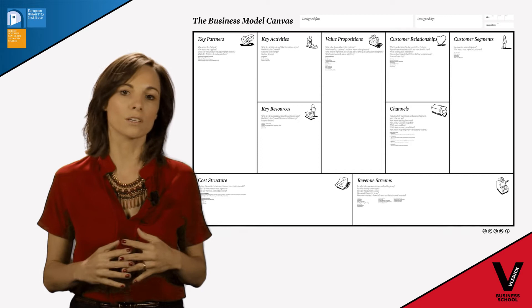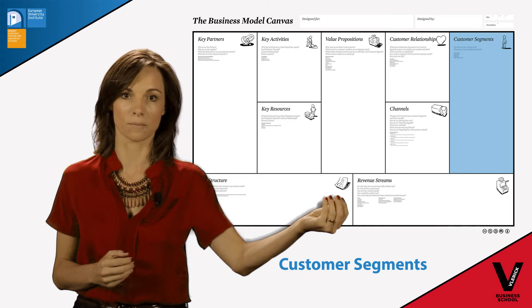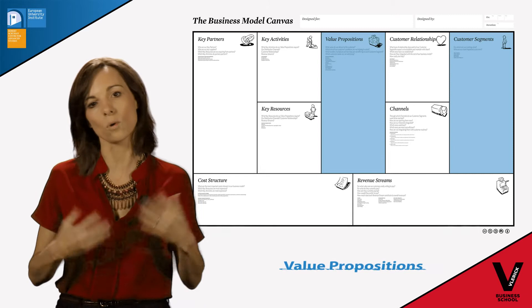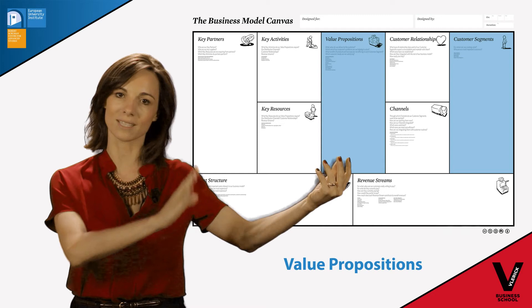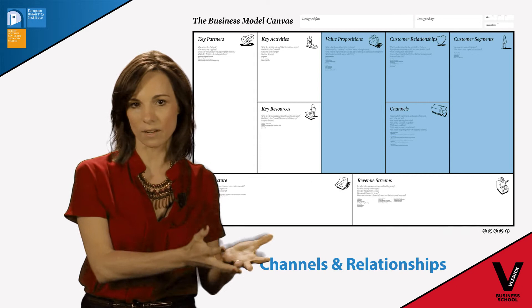If we start from the right, the market side, the first component is what are the customer segments that we are serving? The second component is what is it that we provide for these customer segments — what's our value proposition towards them? The connection between the customer segments and the value proposition is how do we reach those customers, and what kind of relationship do we have with these customers? This is the market side, the customer side of the Canvas.